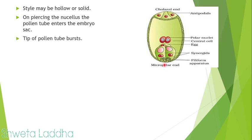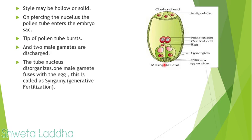The tip of the pollen tube bursts and the two male gametes are discharged. The tube nucleus, also called the vegetative nucleus, disintegrates. The first male gamete fuses with the egg — this fusion is called syngamy or generative fertilization, resulting in the formation of the embryo.